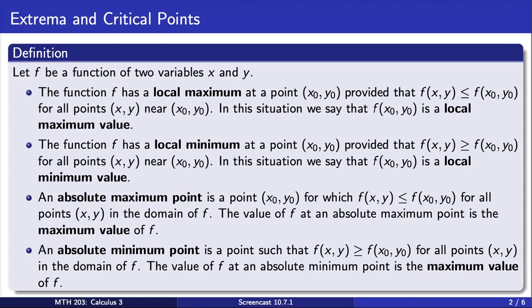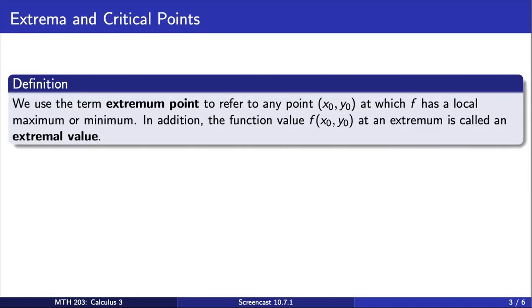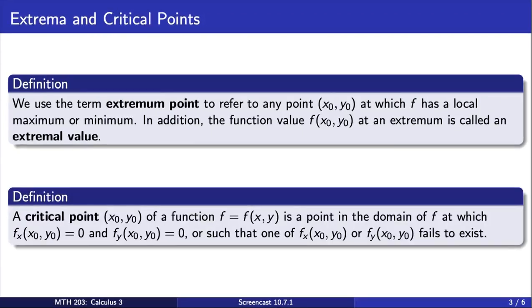A bit more terminology that should be reviewed from single-variable calculus. We use the term extremum point to refer to any point (x₀, y₀) at which f has a local maximum or minimum. In addition, the function value f(x₀, y₀) is an extremum that is called an extremal value. Extremum points in single-variable calculus always occurred at critical points. We have a similar definition for critical points of two-variable functions. A critical point for a function f is a point where both partial derivatives equal zero, or where one of the partial derivatives fails to exist. Critical points can help us determine the location of possible extrema. However, just like in single-variable calculus, not every critical point leads to an extremum.